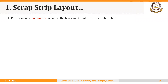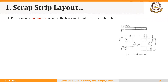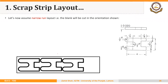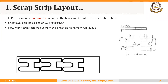Welcome back. For the same blank, we will assume a narrow run layout — the blank will be cut in the orientation shown. We will need a smaller width of the strip but longer length. The blanks will be placed in the orientation shown. The sheet available has the same size of 0.02 × 48 × 120 inches. The question is: how many blanks can we cut from this sheet using a narrow run layout?